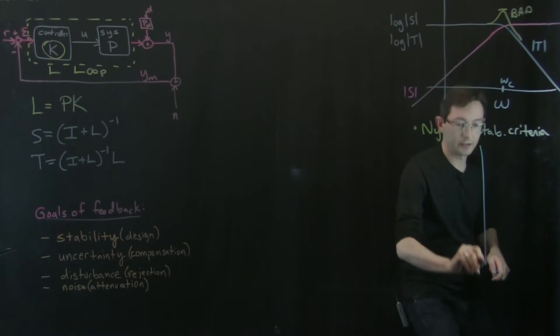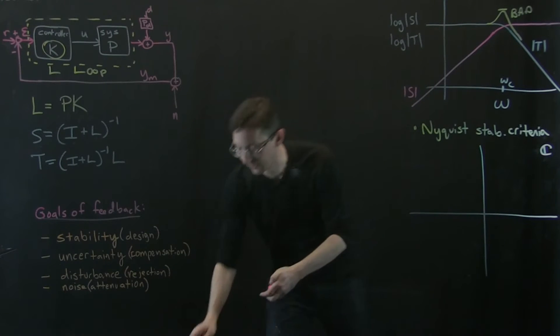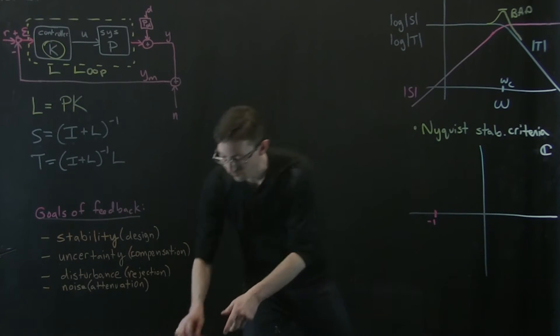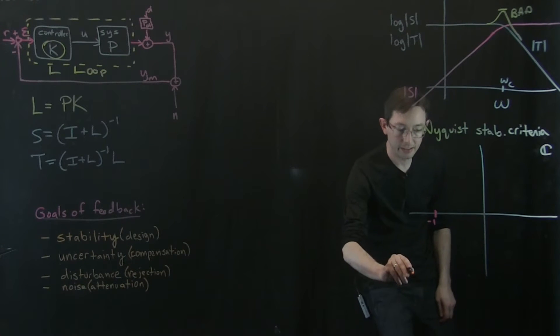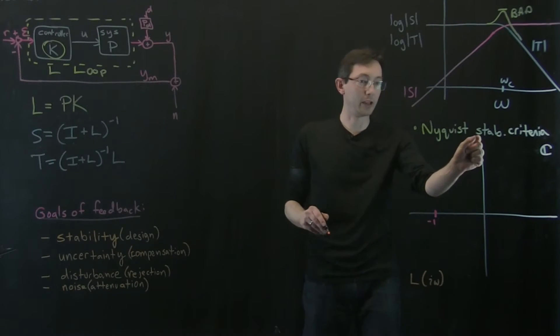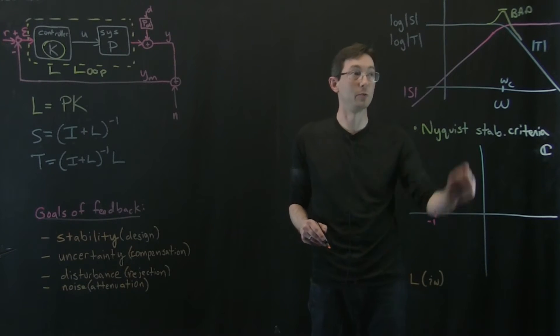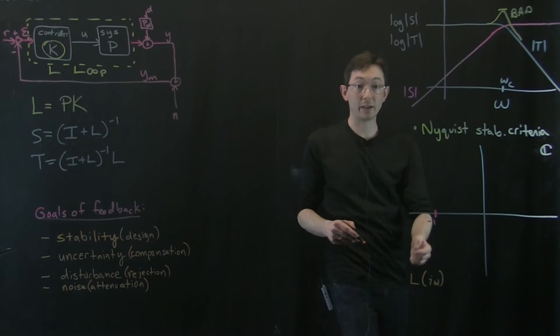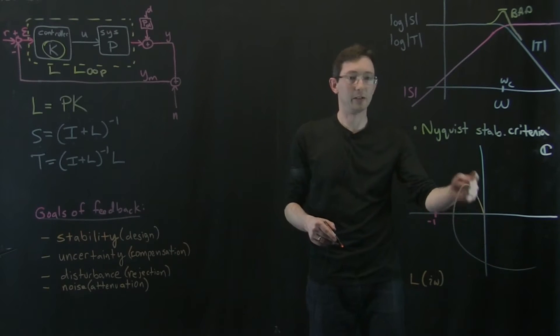that I want my loop transfer function to be as far away from the point negative one in the complex plane as possible for all frequencies. So I'll write this out and I'll draw some pictures. But basically, if I take, let me draw some colors here. So if I take the complex plane C, and I identify the point negative one, and let's say that my transfer function, if I plot, if I literally take L, my loop transfer function, and evaluate it at i omega, and I plug in all the i omegas on the entire imaginary axis. So I kind of take the Bode plot, if you will, the frequency response of L, and I plot the real and imaginary part in the complex plane. Sometimes it'll, I don't know, I'm not really good at drawing this, but it'll look like something.